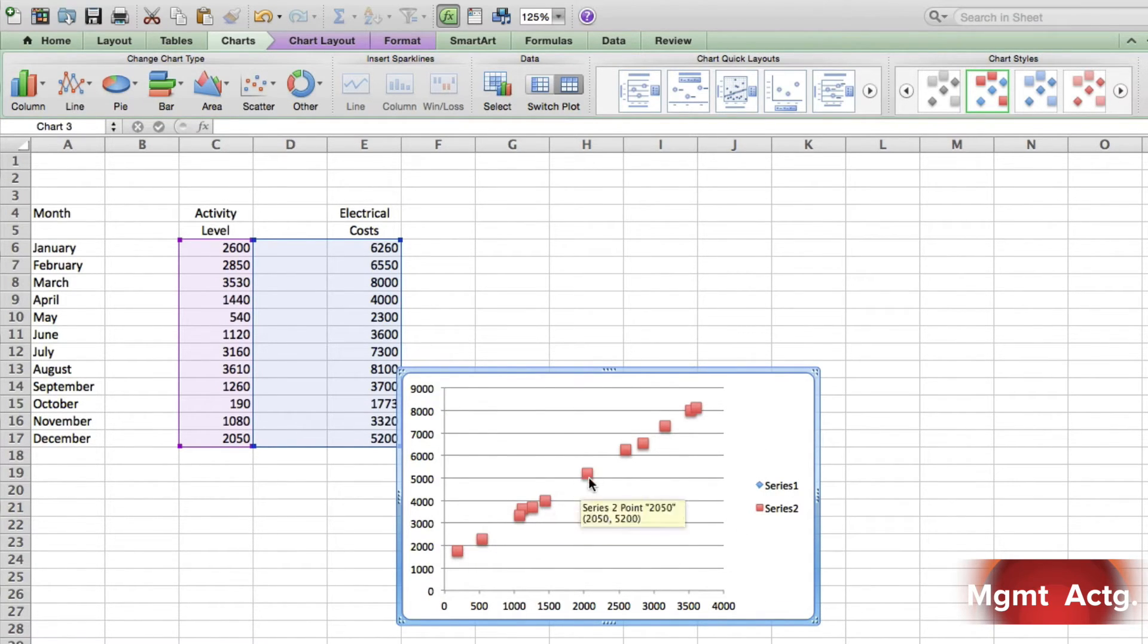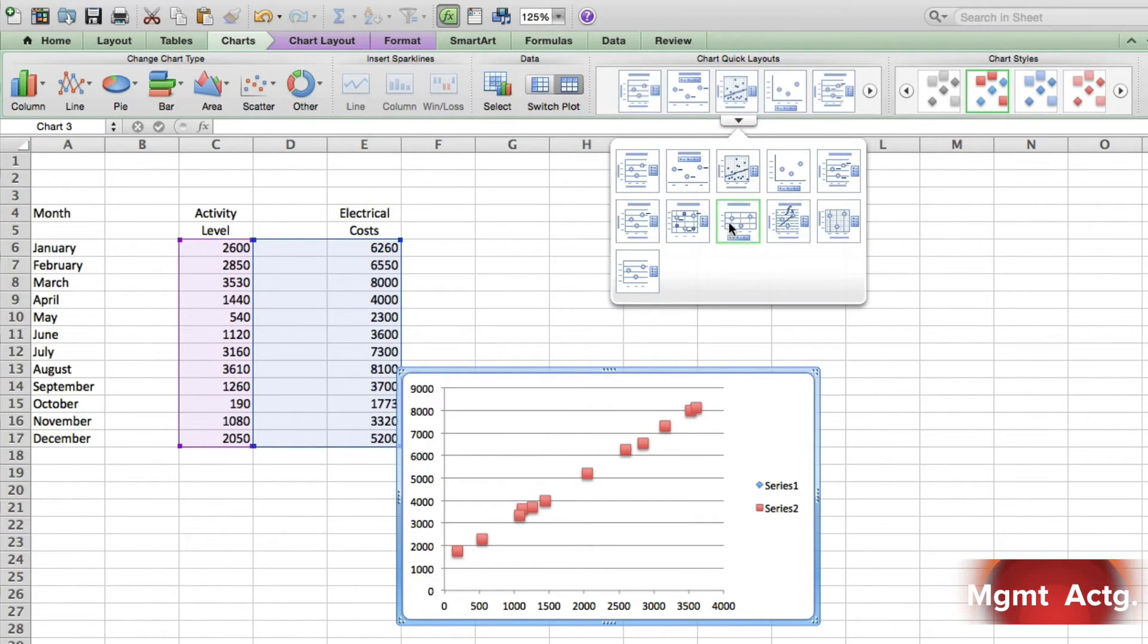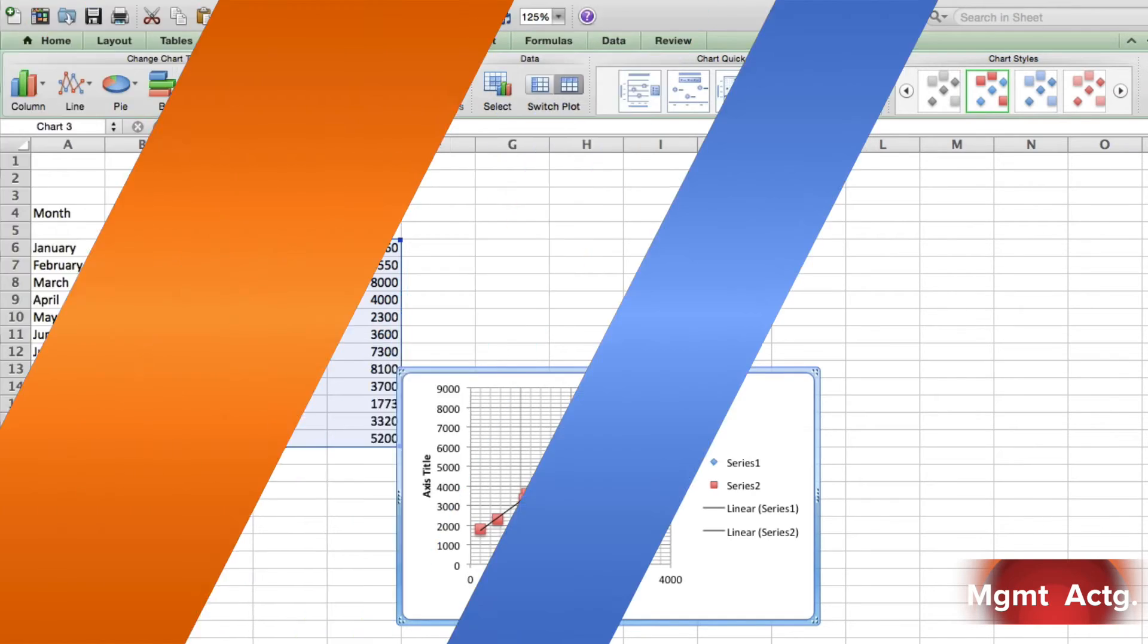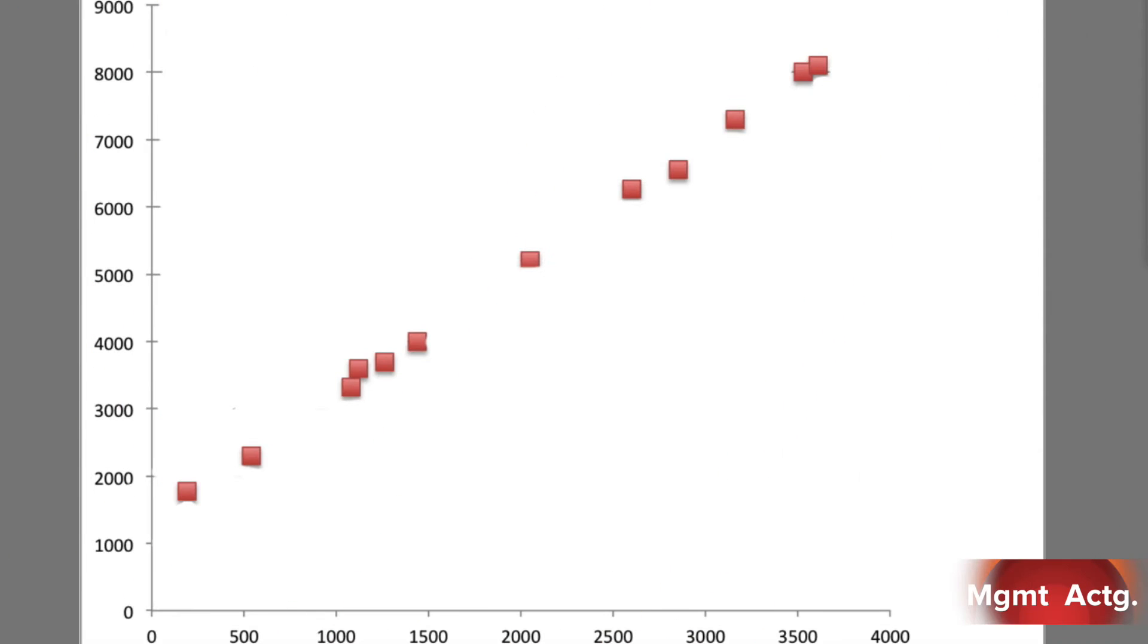But since as the activity level rises we have a linear relationship, we must have a variable component. So what we'd like to do is draw a line through this. Well in Excel that's very easy. See where I'm pointing up here - it says chart quick layouts. There's your little line here. Click on this one and you choose the one you want. This one here has a line drawn through it so we click this. There we go, there's our line through them. So we can see a nice linear line and the data seems to fit that line quite well.